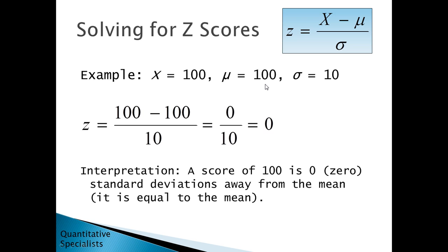In the next example, we have x of 100, a mean of 100, and a standard deviation of 10. Plugging into the formula: 100 minus 100 over 10 gives 0 over 10, which equals a z of 0. As we saw before, a z of 0 means the score is zero standard deviations away from the mean — or simply equal to the mean.